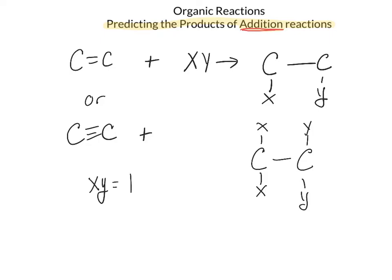The groups that are added are hydrogen, a halogen represented as X2, or water. Let's look at each of these individually.